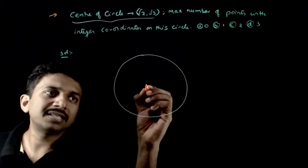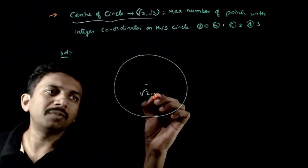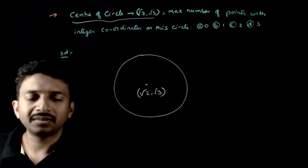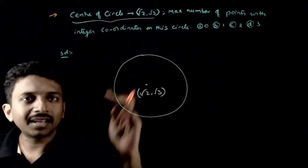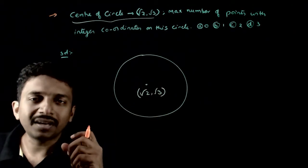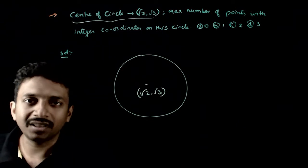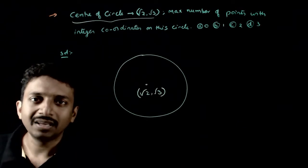This means that you have a circle whose center is √2 comma √3. In this circle, maximum number of integer points can be the maximum number of integer points.